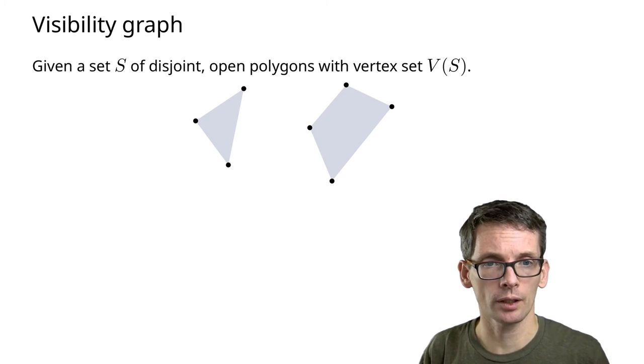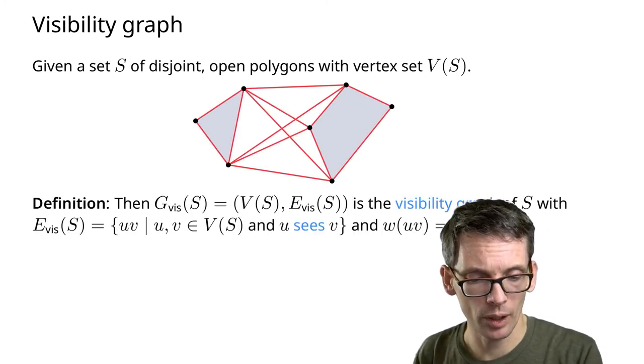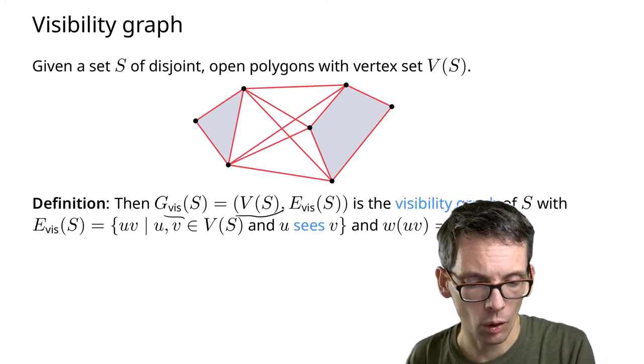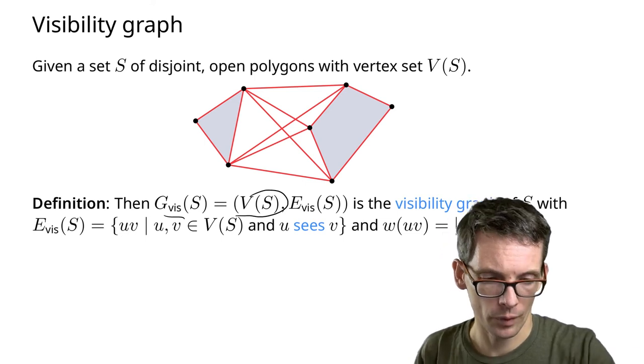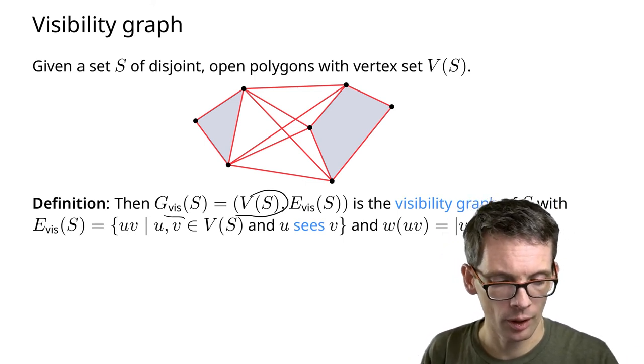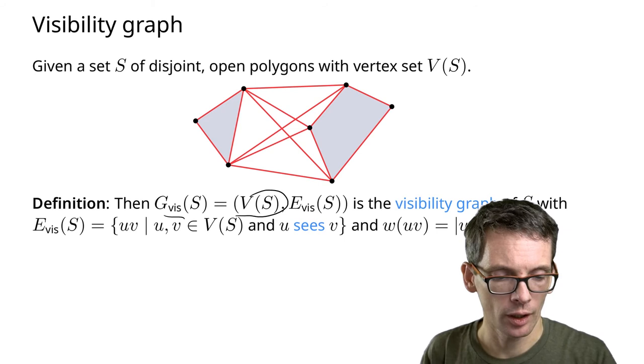We're going to define the visibility graph as a graph on the vertices of my polygons, and I have an edge if and only if those two vertices see each other.